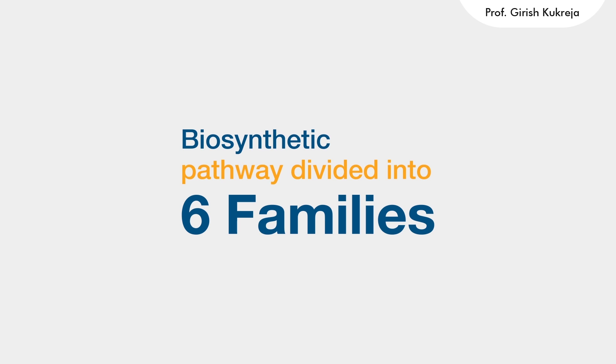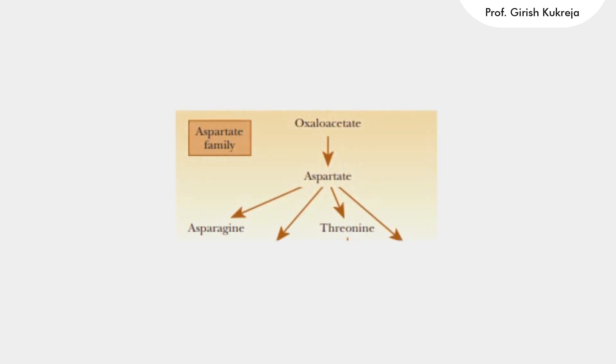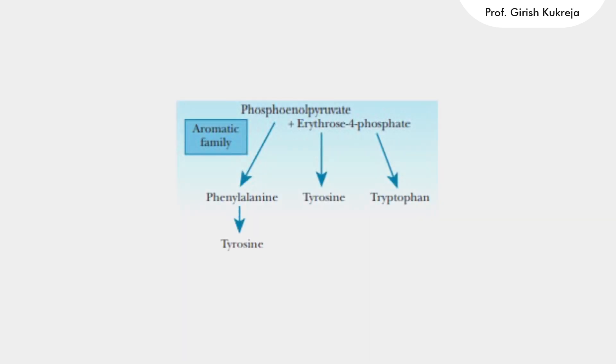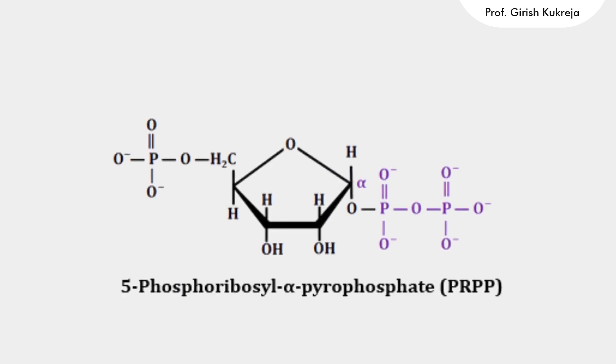According to the precursor, the families of amino acid biosynthetic pathways are: the alpha-ketoglutarate family, the 3-phosphoglycerate family, the oxaloacetate family, and the pyruvate family.